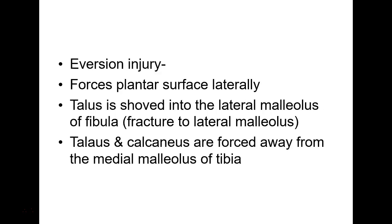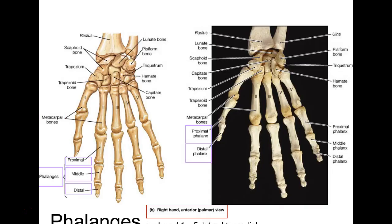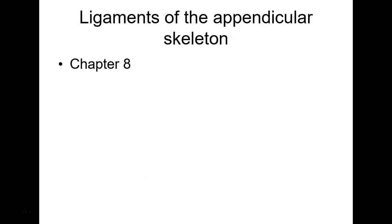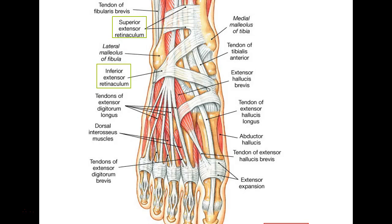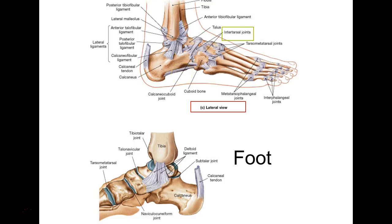Down at the foot there's an extensor retinaculum — a superior and inferior one, but just say extensor retinaculum if I point at it. At the ankle on the medial side, with the medial malleolus of the tibia, you have the deltoid ligament — nothing to do with the deltoid muscle at the shoulder, but it's the same word.